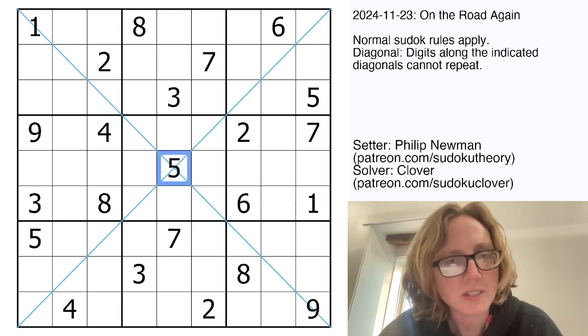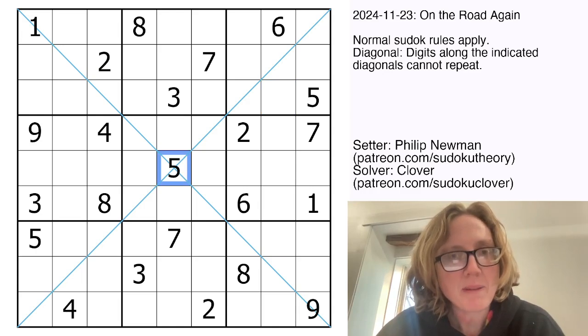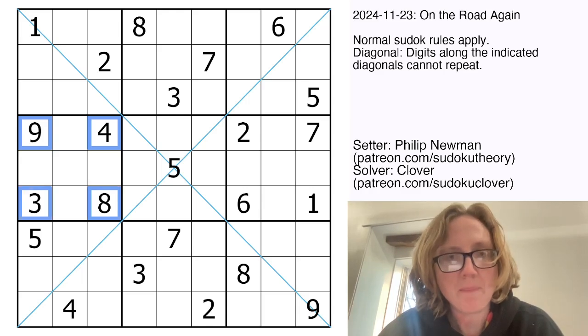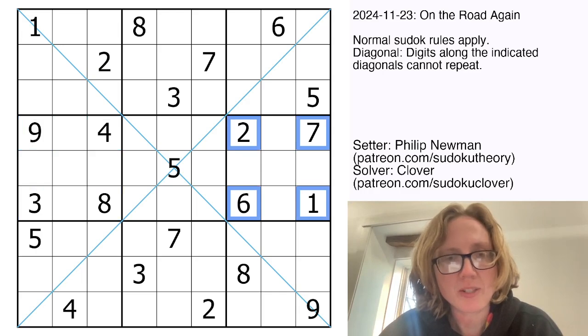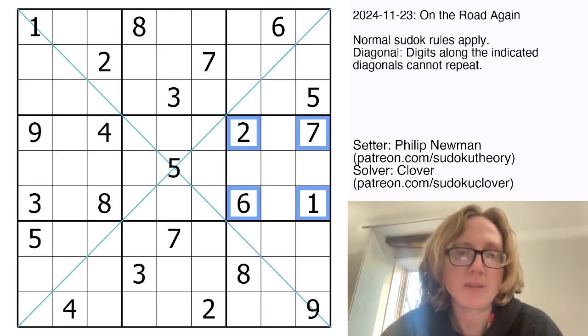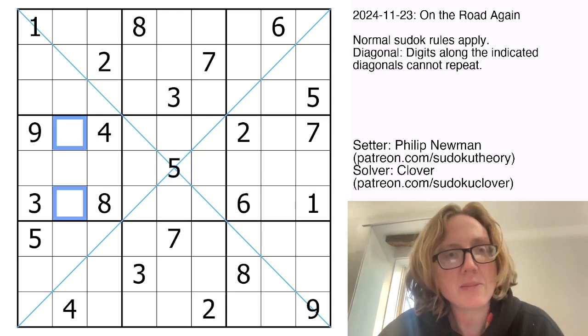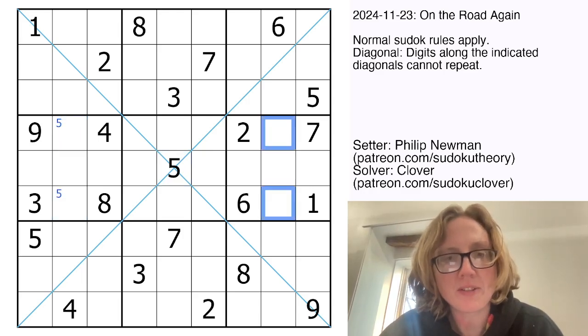So let's have a look. The thing that's standing out to me first is that we have these sets of four digits that are arranged in the corners of these regions in regions 4 and 6. That tells me that there has to be a 5 in one of those cells, and there also has to be a 5 in one of those cells.